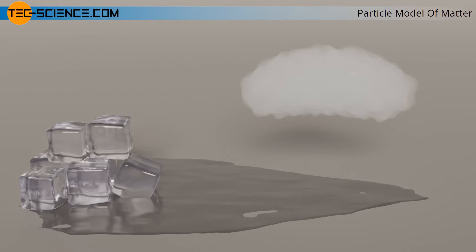The solid state, the liquid state, and the gaseous state. In the following, these different states of matter are explained in more detail.